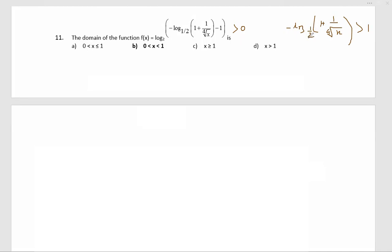Log of half can be reduced to the power minus one, so that minus minus will cancel. Therefore, log of one plus one by fourth root of x is greater than one.